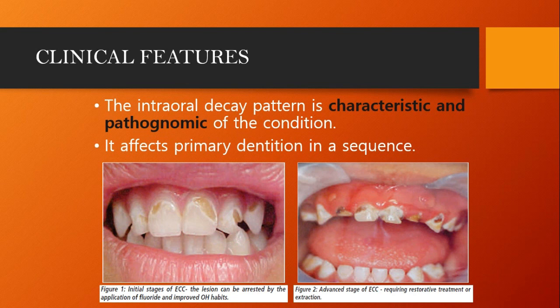Clinical features of early childhood caries are characteristic and pathognomonic of the condition. It affects primary dentition in a sequence. As we can see in this figure, the maxillary central incisor cervical region, lateral incisor, and canine cervical region — this is the initial stage of early childhood caries. The lesion can be arrested by application of fluoride and improved oral health habits if diagnosed at this stage. If it advances further, it requires restorative treatment or extraction.